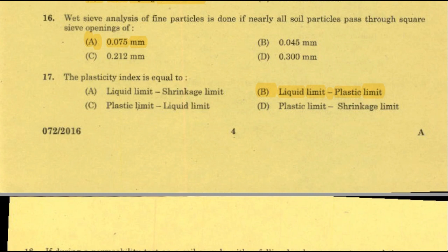As liquid limit increases, plasticity index increases. Highly plastic soil is clay — clay is highly plastic due to absorbed water. Bentonite clay has a liquid limit of 400% to 600%.